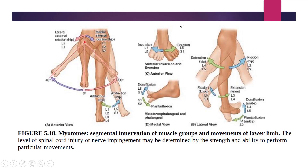This diagram shows inversion and eversion at the subtalar joint. Inversion is moving the sole of the foot toward the midline of the body, and eversion is moving the sole of the foot away from the midline. Inversion is caused by muscles innervated by L4 and L5, while eversion is caused by muscles innervated by L5 and S1.